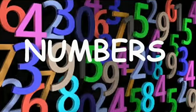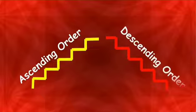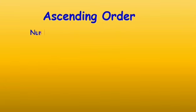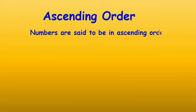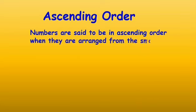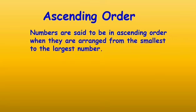Numbers. Ascending Order. Numbers are said to be in ascending order when they are arranged from the smallest to the largest number.